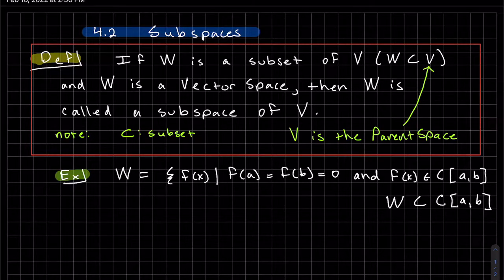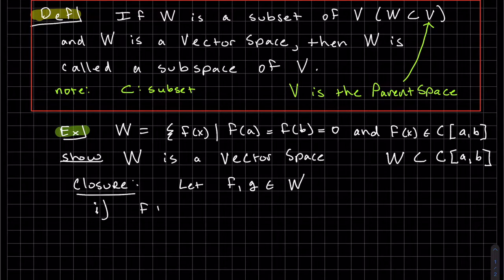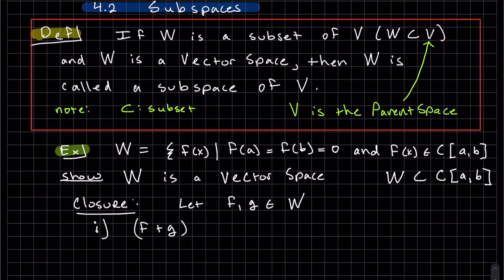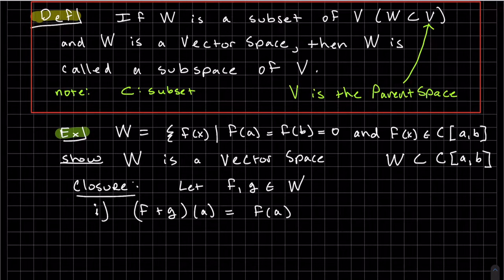Let's show W is a vector space. We start with closure. Let F and G be elements of W. Is F plus G an element of W? We add the two functions. F plus G will be in W if both F plus G of A equals 0 and F plus G of B equals 0. Let's work out this one first. This is the definition of adding two functions.